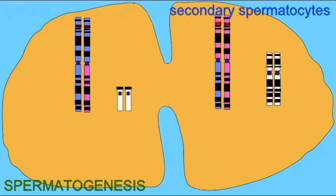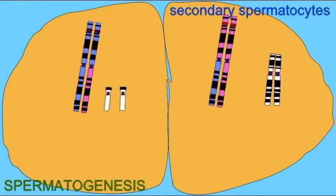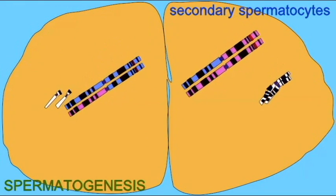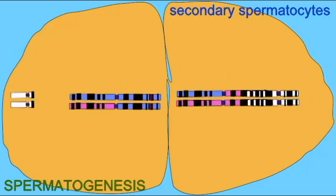During meiosis II, these homologous chromosomes separate, and thus each sperm will receive one sex chromosome.